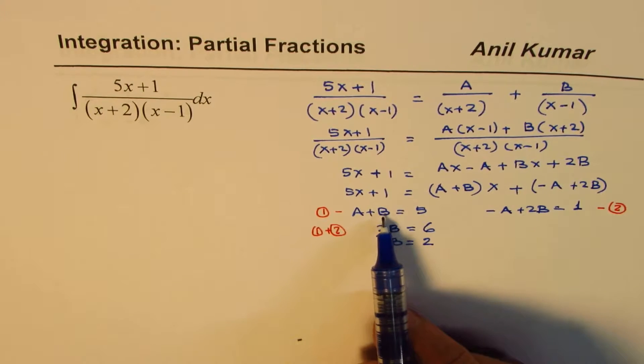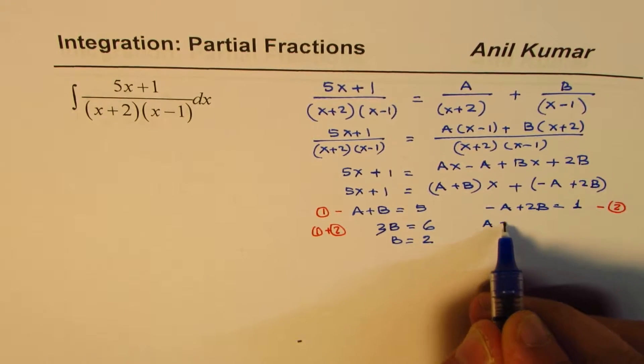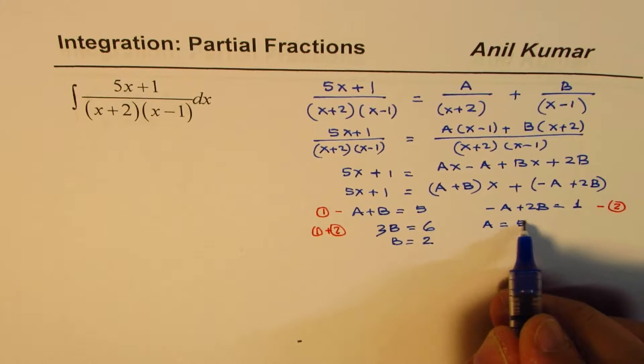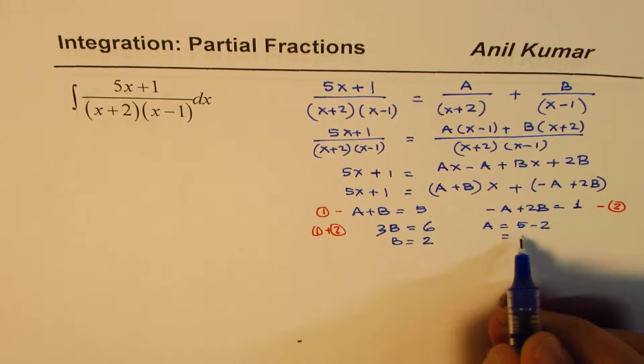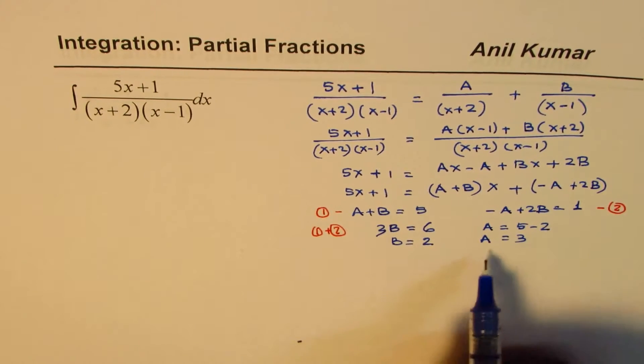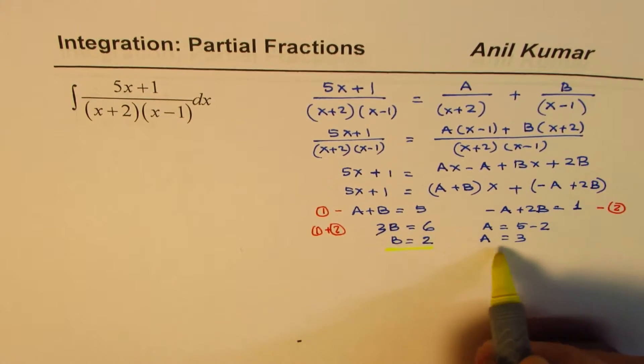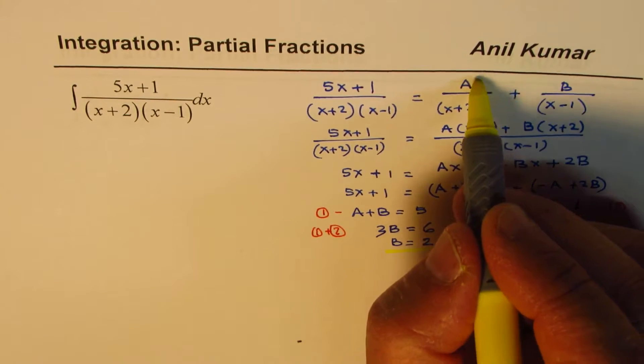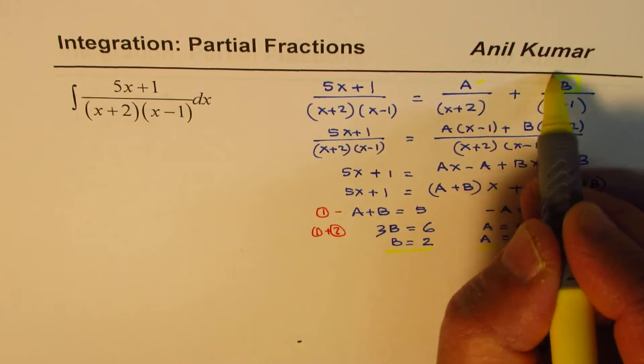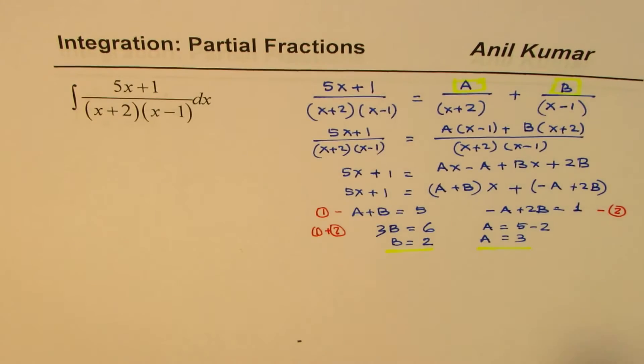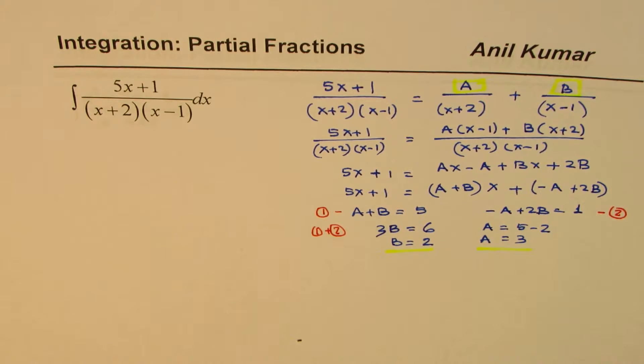Now if b is 2, I can substitute it here and say a is equals to 5 minus 2, which is 3. So a is 3 for us. So we got the values of a and b. So these are the values of a and b. We can substitute them here and then rewrite the question in the form of partial fraction. Do you see that part?